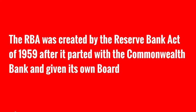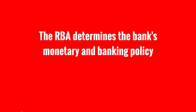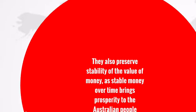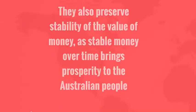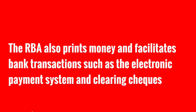The RBA was created by the Reserve Bank Act of 1959 after it parted with the Commonwealth Bank and was given its own board. The RBA determines the bank's monetary and banking policies. They also preserve stability of the value of money, as stable money over time brings prosperity to the Australian people. The RBA also prints money and facilitates banking transactions, such as the electronic payment system and the clearing of cheques.